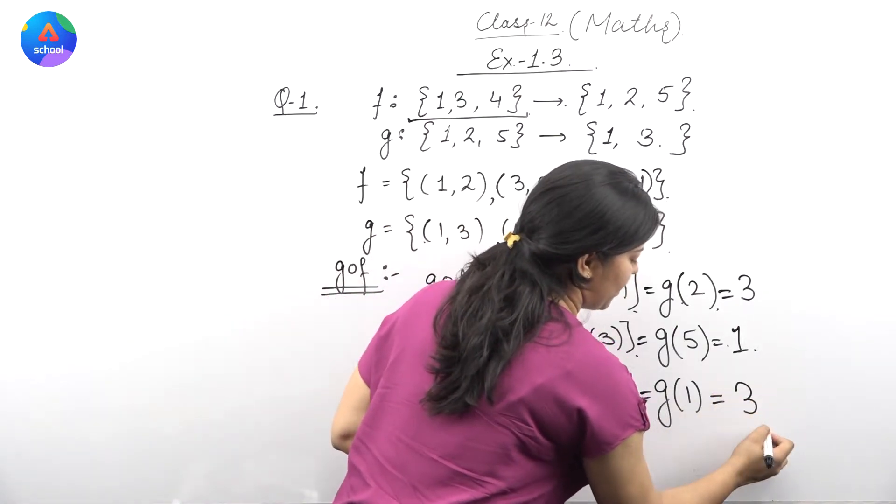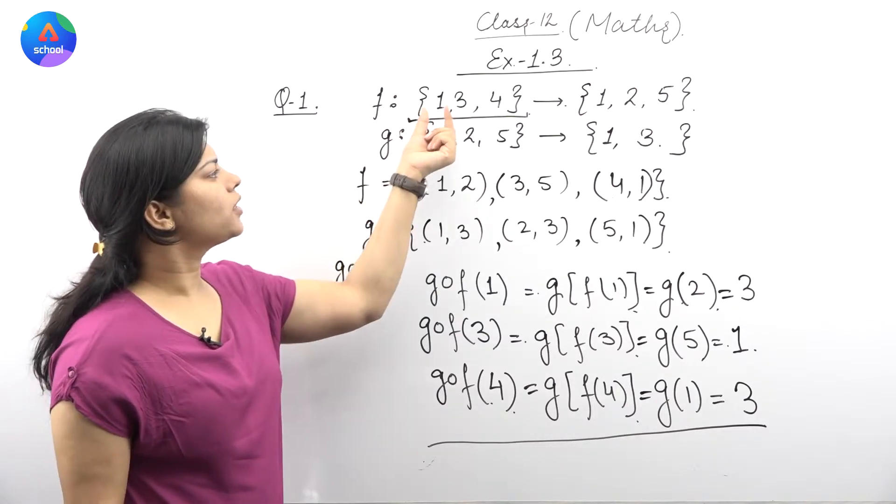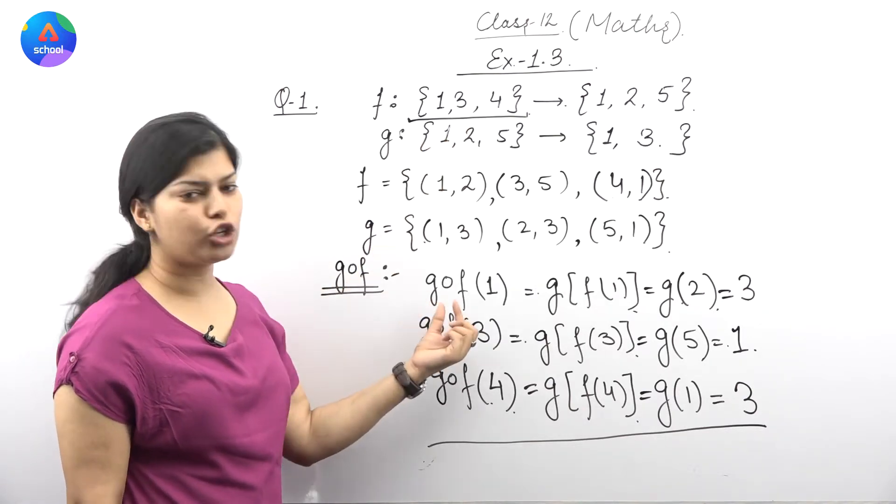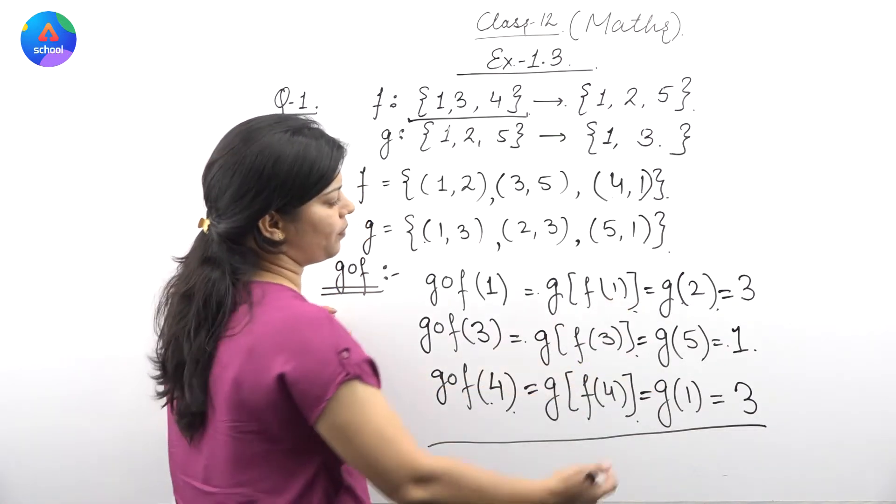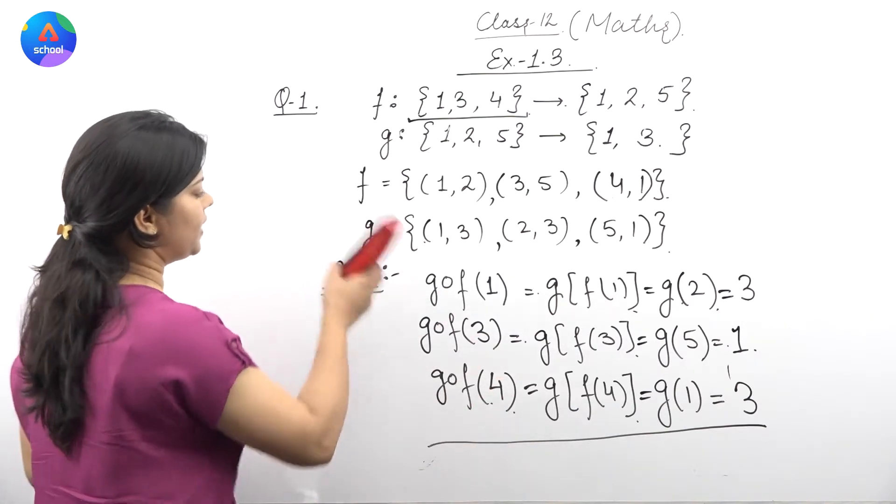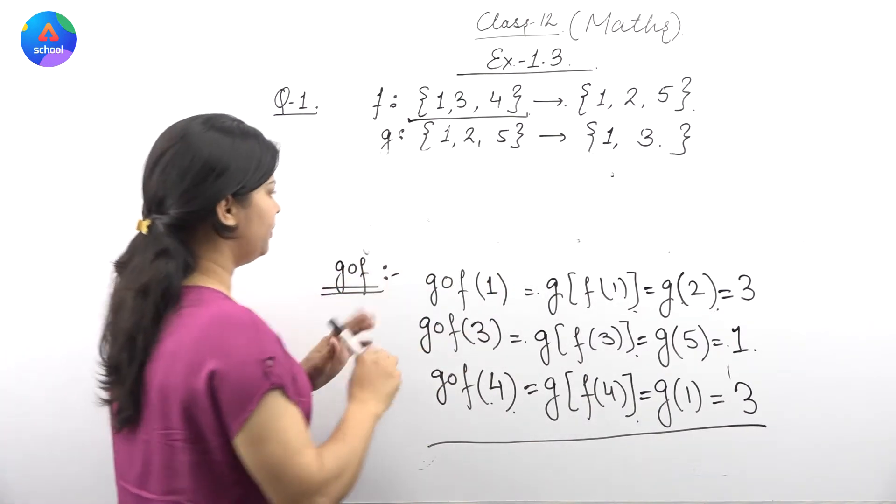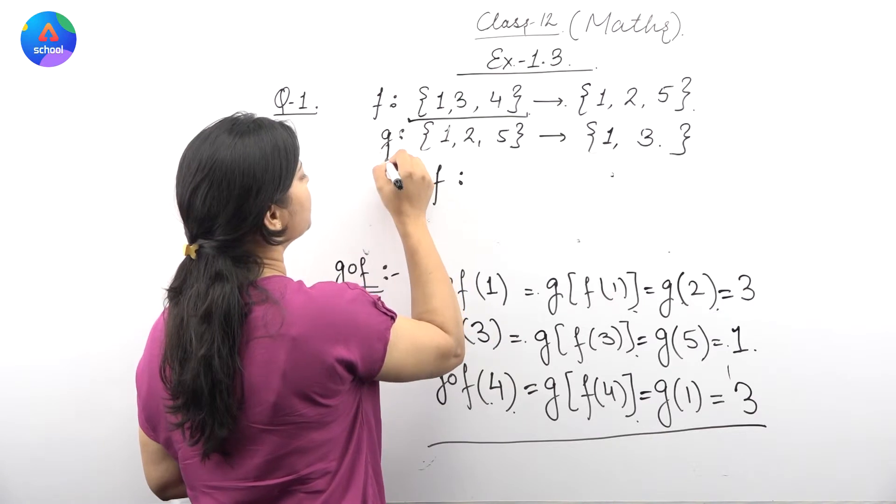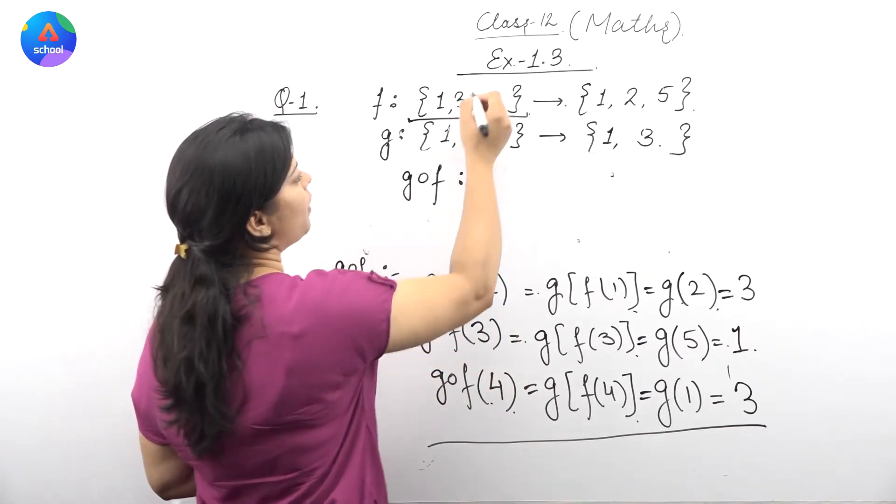So we applied g∘f to all elements in F's domain and found out what images we're getting. So g∘f has become a new function for us. Let me erase this so we can write about g∘f. g∘f, the composition of these two functions, is a new function.